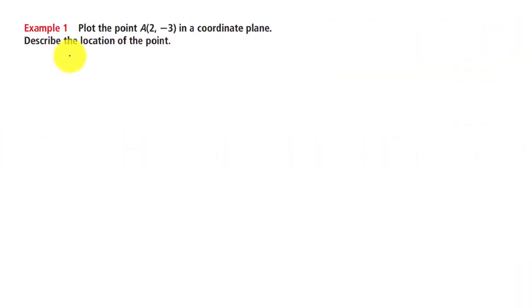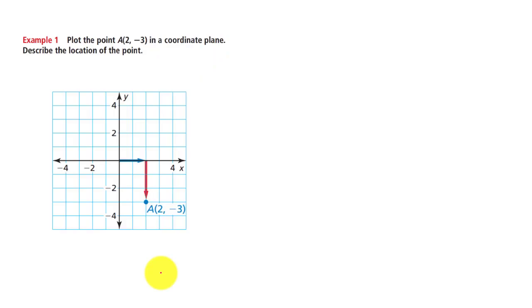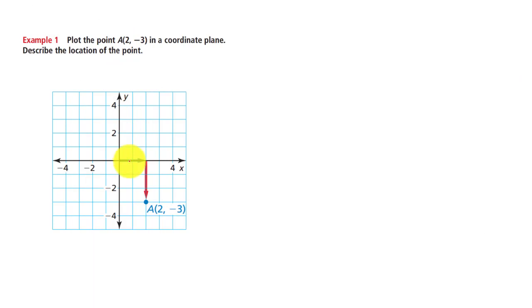Now we will learn how to plot a point in a coordinate plane. Suppose a point A is given whose coordinates are 2 comma negative 3. Here X coordinate is 2 and Y coordinate is negative 3. To locate point A, we have to first move 2 units on right.